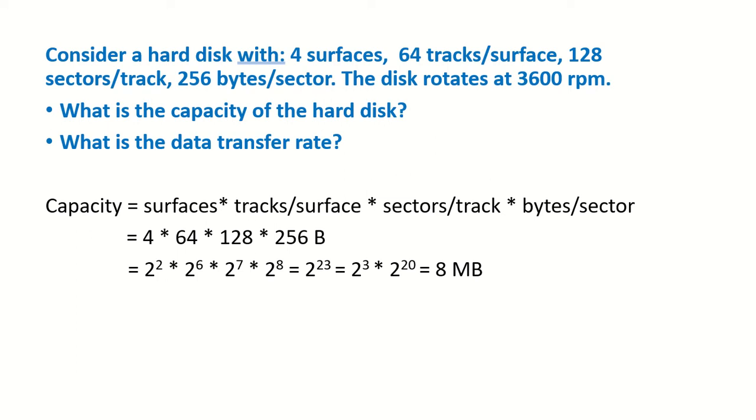Consider a hard disk with 4 surfaces, 64 tracks per surface, 128 sectors per track and 256 bytes per sector. The disk rotates at 3600 rpm.